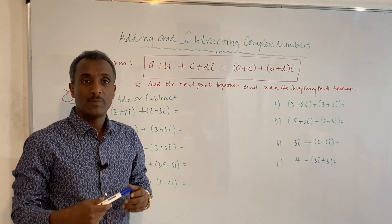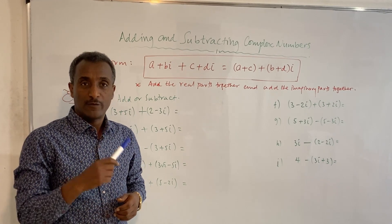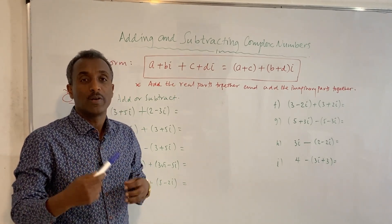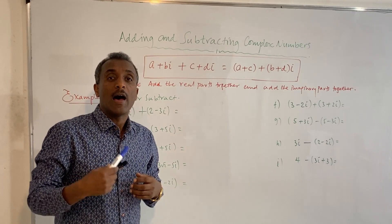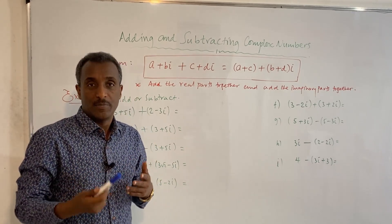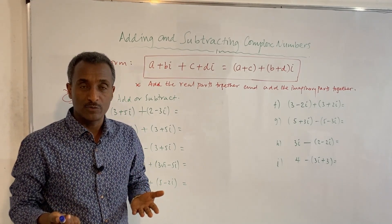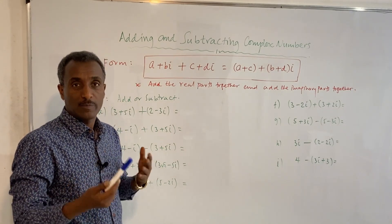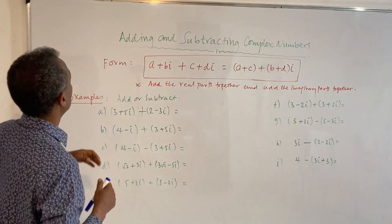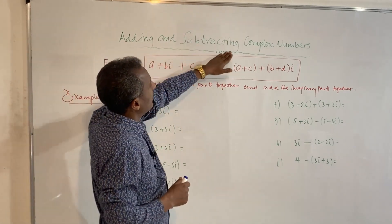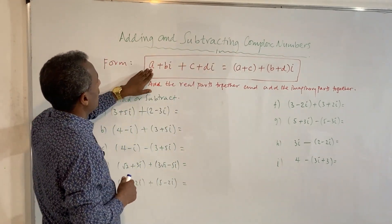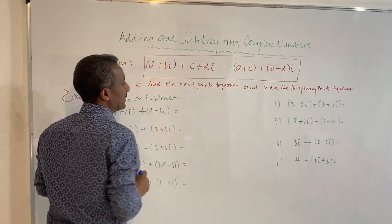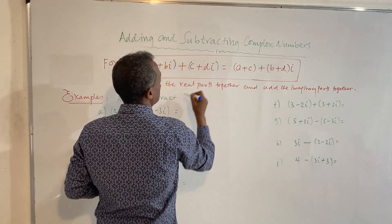We can add and subtract complex numbers. When we have a complex number formed as A plus Bi, and another complex number C plus Di, we can add them together.